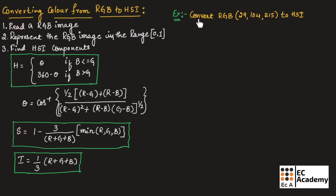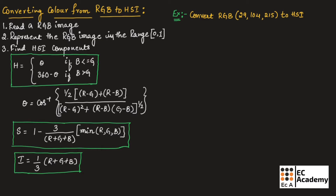Let us take an example here. RGB values are given and we need to convert these RGB values to HSI values. The first step is to read the RGB image. Once the RGB image is read, we will get the values for R, G, and B.